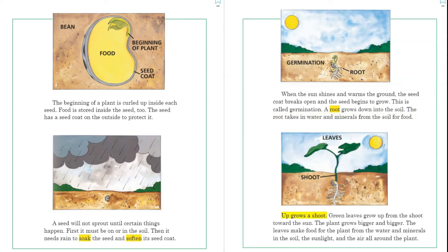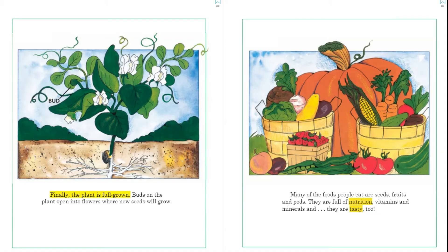Up grows a shoot, and green leaves grow up from the shoot toward the sun. The plant grows bigger and bigger. The leaves make food for the plant from the water and minerals in the soil, the sunlight, and the air all around. Finally, the plant is full grown. Buds on the plant open into flowers where new seeds will grow. Many of the foods people eat are seeds, fruits, and pods — they are full of nutrition, vitamins, and minerals.